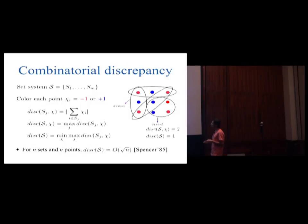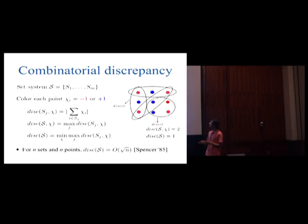A classical result in this field is Spencer's theorem, which says that if you have n sets and n points in the set system, then there is a colouring such that each set has discrepancy order root n. This is a big deal because it beats random colouring.